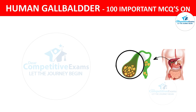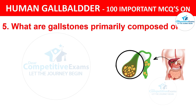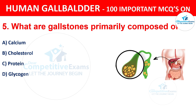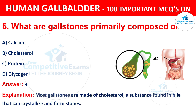Question 5: What are gallstones primarily composed of? Your options are: A) Calcium, B) Cholesterol, C) Protein, D) Glycogen. The correct answer is B, i.e. Cholesterol. Most gallstones are made of cholesterol, a substance found in the bile that can crystallize and form stones.